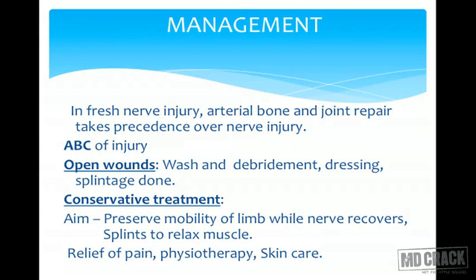Management is in conservative and operative form. In conservative treatment, the aim is to preserve the mobility of the limb while the nerve recovers, and splinting is used to relax the whole muscle. It also provides relief of pain. Physiotherapy is a must, and skin care is important so that no ulcers form later.